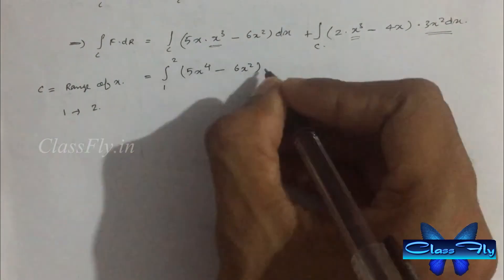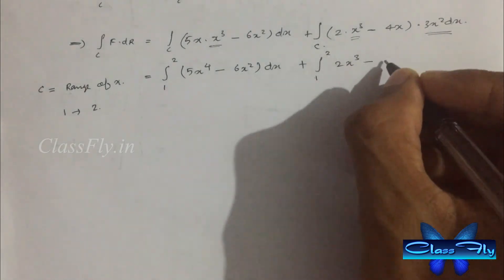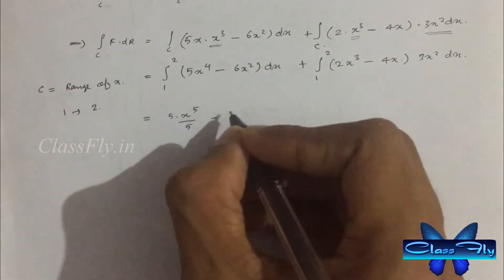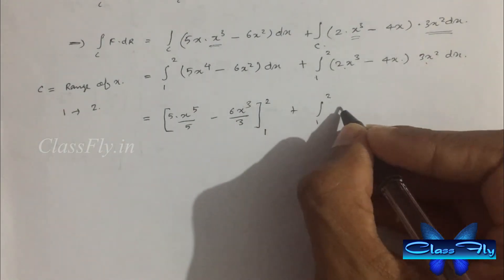Here c is the range of x which is 1 to 2. After integrating and applying the limits we will get the answer 35.